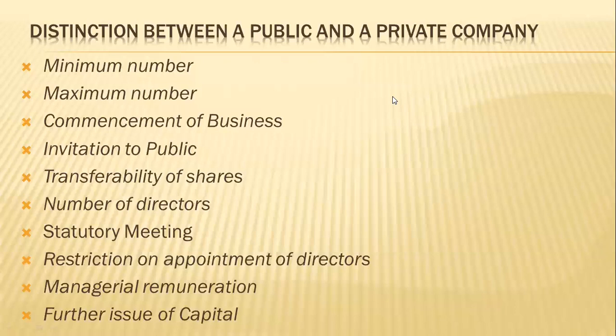Point nine — managerial remuneration: total managerial remuneration in the case of a public company cannot exceed 11% of the net profit, but in case of inadequacy of profits a minimum of rupees 50,000 can be paid. These restrictions do not apply to a private company. Point ten — further issue of capital: a public company proposing a further issue of shares must offer them to the existing members, whereas a private company is free to allot new shares to outsiders.